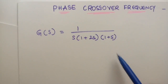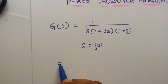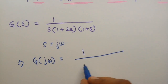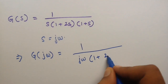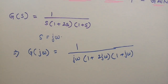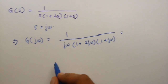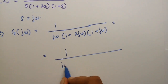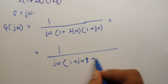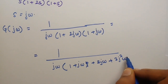So the first step is to put s equal to jω. So let me rewrite this transfer function, which is going to be G(jω) equal to 1 by jω into (1 plus 2jω) into (1 plus jω). And now just simplify the expression, which will give you 1 by jω into (1 plus jω plus 2jω plus 2j²ω²).